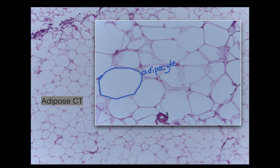For the Grossmont or Miramar students who need to know this: here is our blood vessel, which looks very different from the adipocytes. SDSU students, you don't need to know that. The blood vessel you can see is wrapped in smooth muscle — that's how you can identify it.